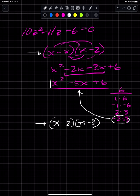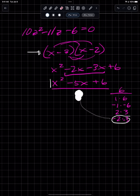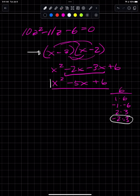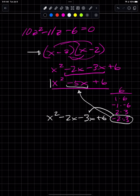We could also have done it this way. Instead of thinking of those two numbers, negative 2 and negative 3, as the constants in our binomial factors, we think of them as numbers by which we would split this middle term. We would get negative 2x minus 3x plus 6, meaning I'm splitting this negative 5x into the sum of negative 2x and negative 3x.